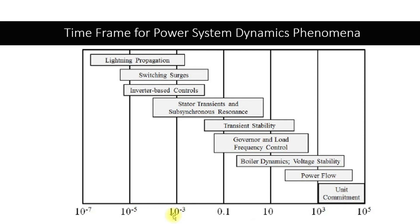Power flow is a study where everything has settled — generators, loads, and everything. This covers multiple minutes to hours. Beyond this scope, we go to long-term studies like unit commitment studies, which are concerned with days or weeks. So EMTP covers up to milliseconds, dynamic stability covers milliseconds to seconds, and power flow covers seconds to hours.